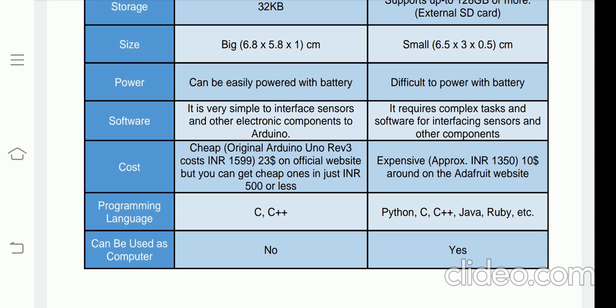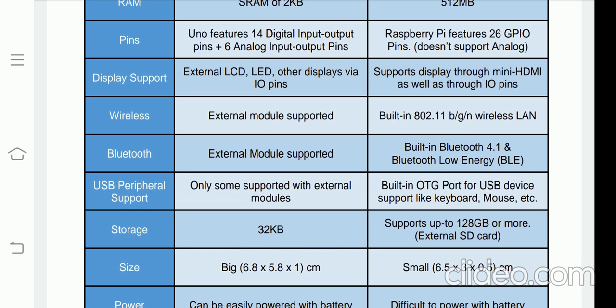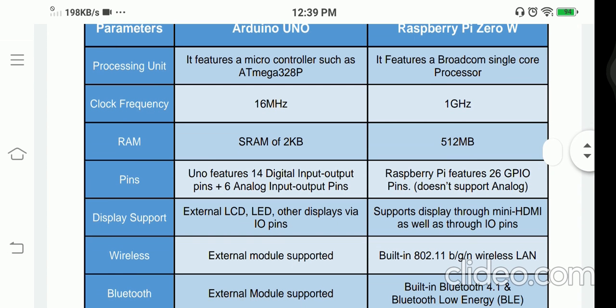Whether Arduino can be used as a computer — the answer is no. We cannot use Arduino as a computer; we can connect it to a PC, upload code, and use it as a processor only. But in the case of Raspberry Pi, we can connect a monitor, keyboard, and mouse and use the Raspberry Pi as a PC or a full computer system. This is the difference between Raspberry Pi and Arduino.